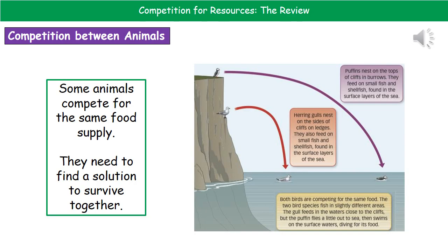If we consider competition between animals, in some areas you've got different species competing for the same food supply. In order to survive in the same area together they need to find some kind of solution to this problem. As we can see in the diagram, we have a puffin and a herring gull. They both live in the same area on the cliff and both feed on shellfish and small fish in the sea. However, they go to different areas to feed — the puffin goes much further out to sea while the gull tends to stay much closer to the cliffs. So even though they feed on the same food, because they feed in different areas they can actually survive in the same environment together.